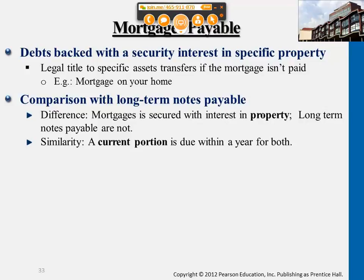For example, if a company purchased a building and land together as a group purchase and signed a mortgage payable, they would pay incremental amounts of principal and interest every single month. But if there's one month they're not able to pay and it passes the grace period, the other party has the right to transfer the title of the building and land to them.